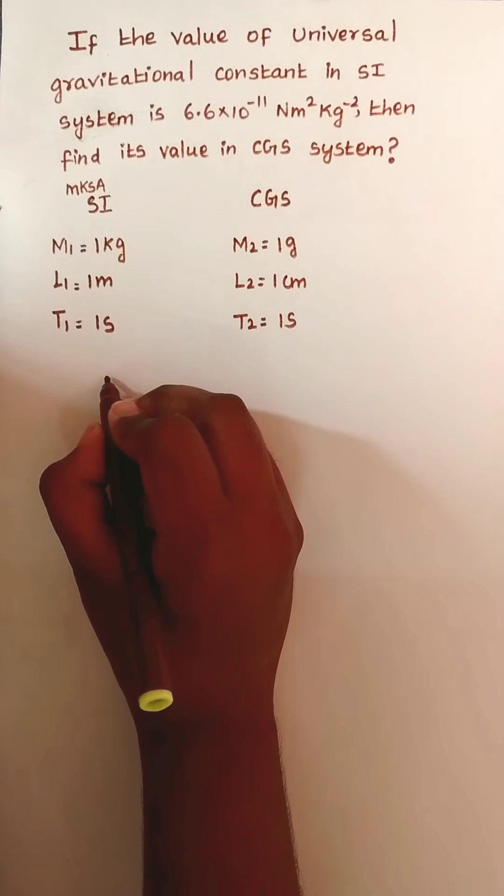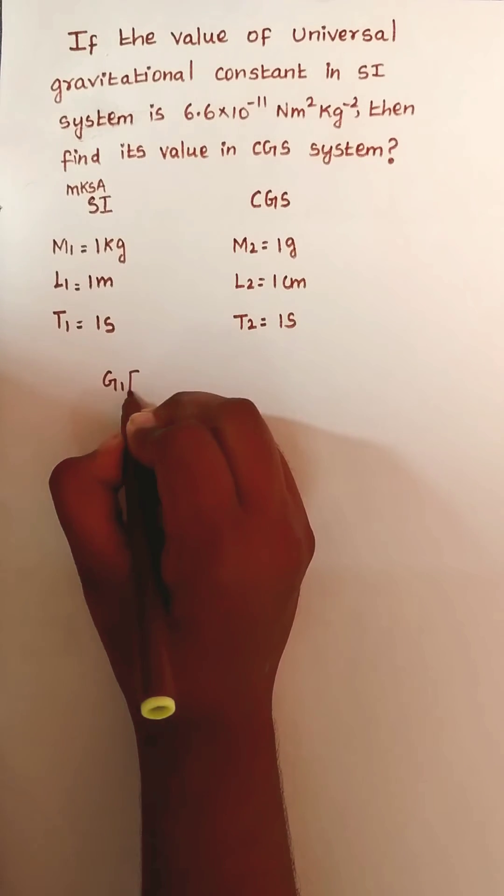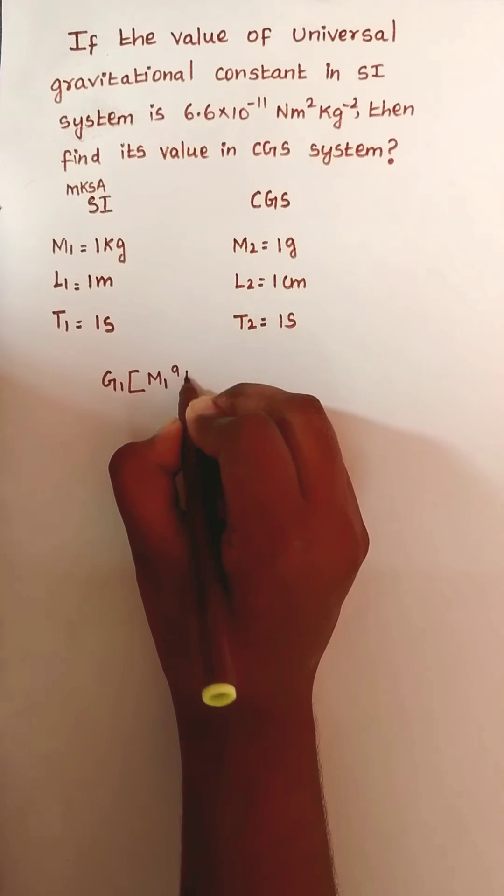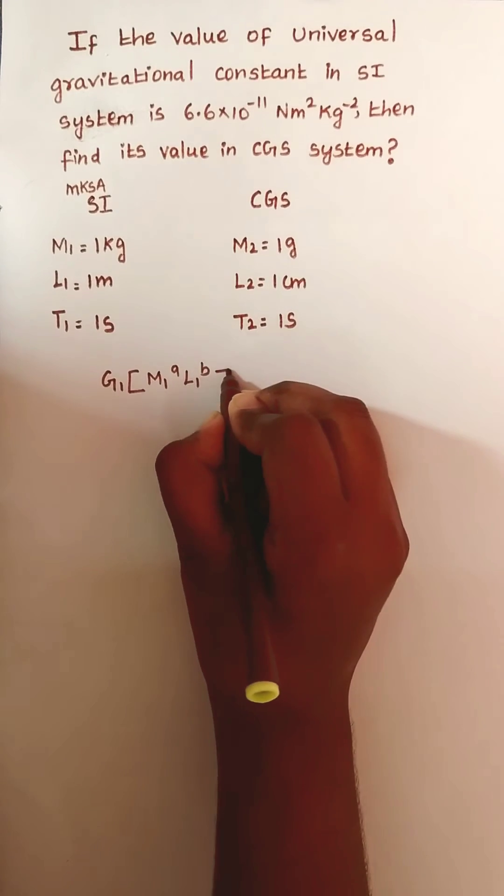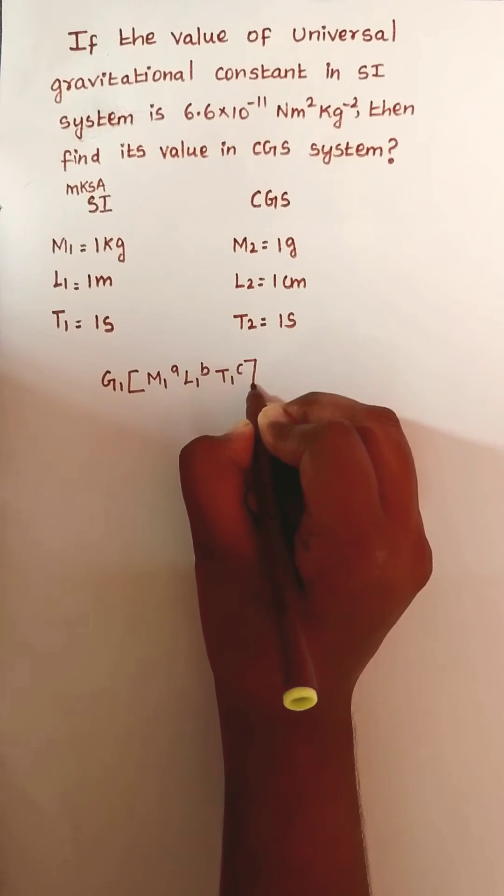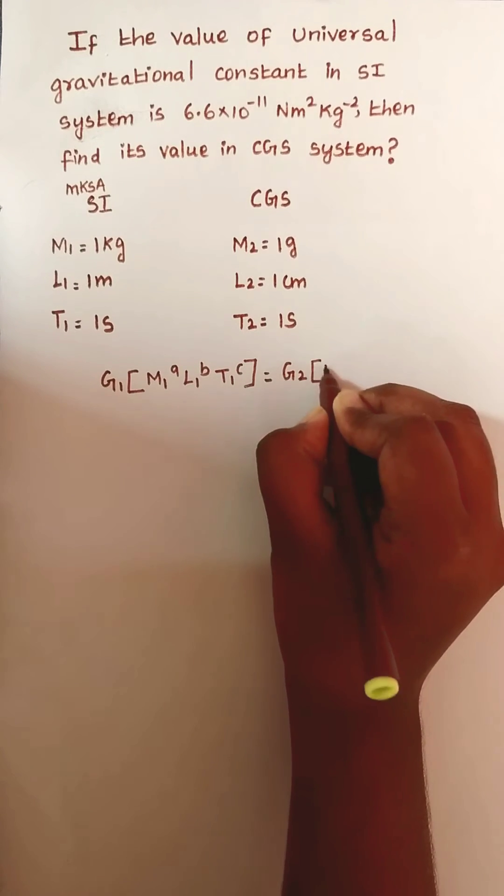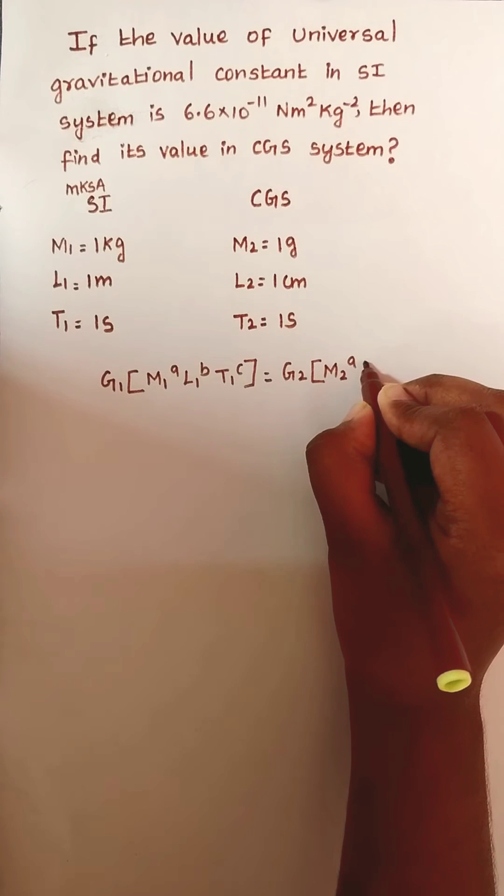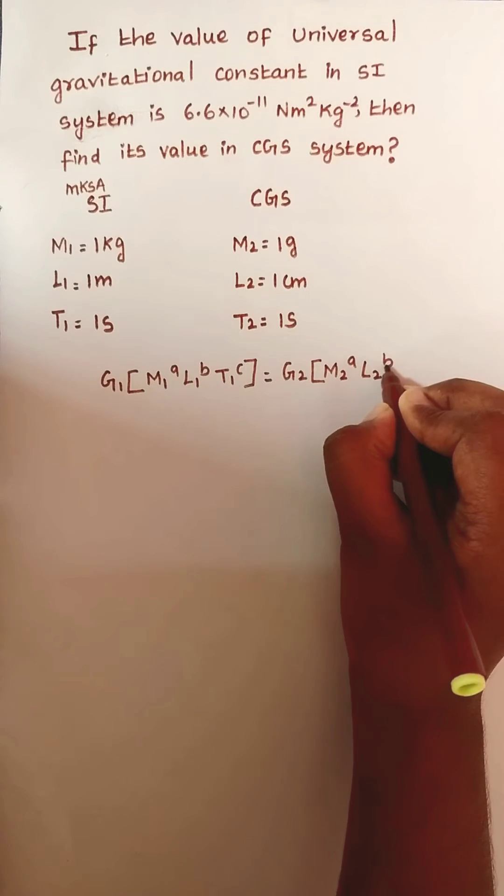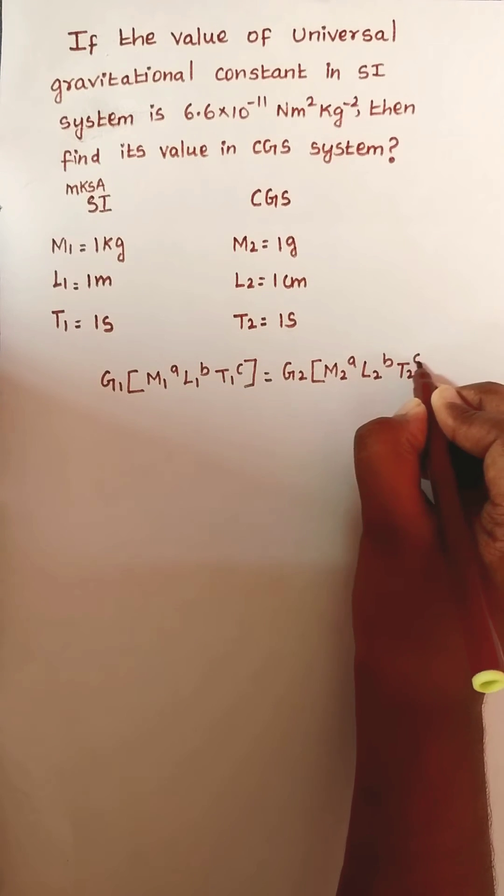We already know the formula: G₁[M₁]ᴬ[L₁]ᴮ[T₁]ᶜ = G₂[M₂]ᴬ[L₂]ᴮ[T₂]ᶜ.